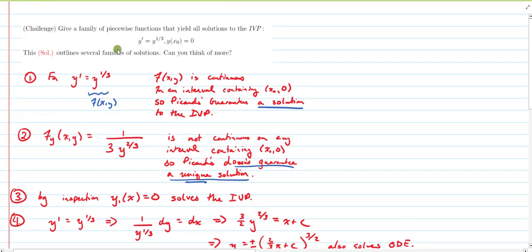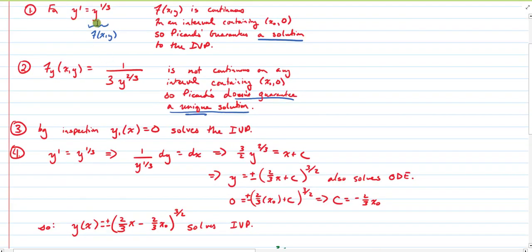And so I went ahead and set this in. We're in normal form here, so I'm calling this f of xy. This is that y to the one-third power. And Picard's theorem guarantees that we have a solution on any interval containing that point because this function is continuous on that interval. And so Picard's theorem does guarantee a solution to this IVP.